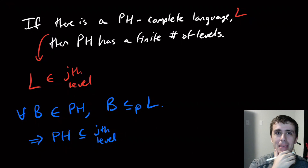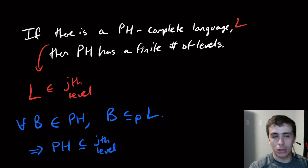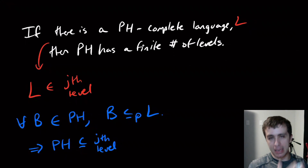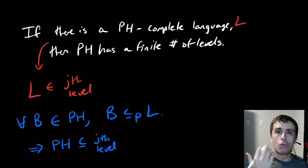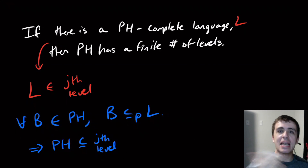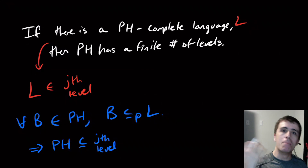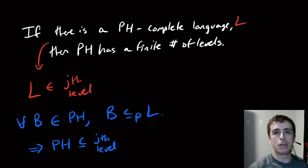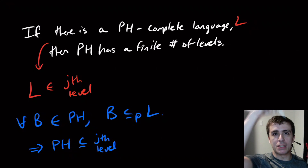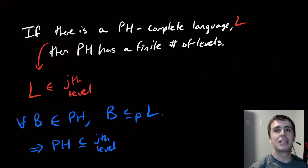There is a more formal definition of the polynomial hierarchy, but it's not really necessary at the beginning stages. The key idea is: an oracle is just instant access to a particular language. What we've shown is that the polynomial hierarchy has this weird behavior — it's unlikely to behave like its neighbors NP and PSPACE — because it's unlikely to have a complete language, though we haven't proven it doesn't have one. Leave thoughts in the comments, like the video, and subscribe!